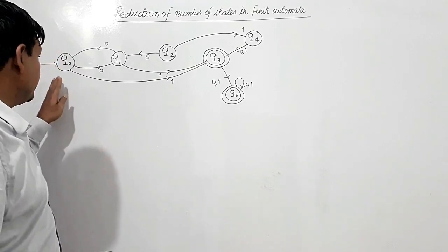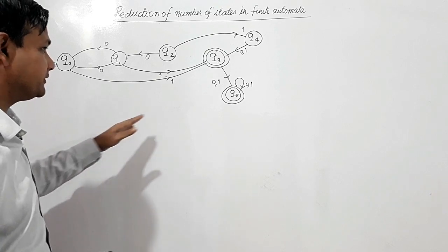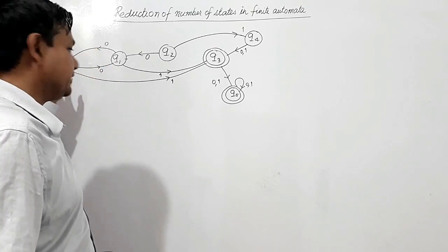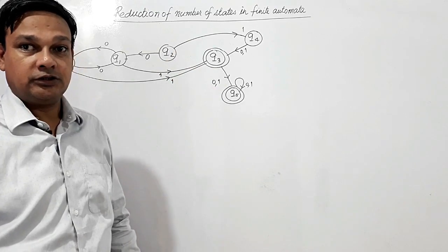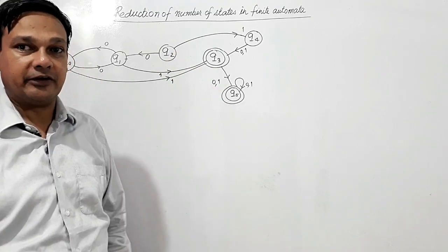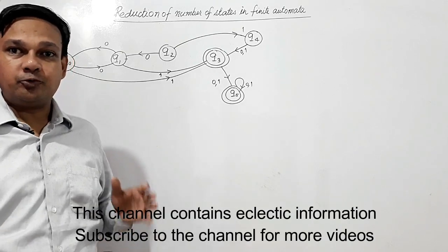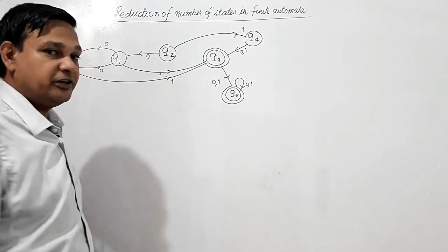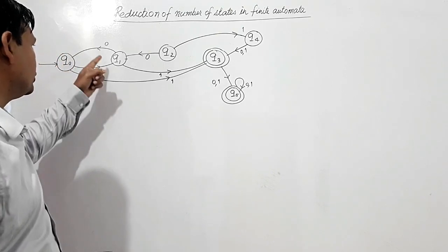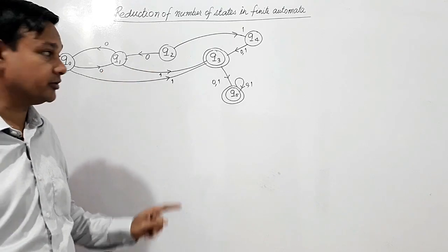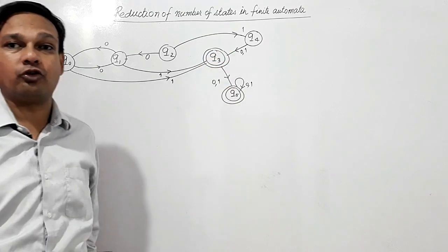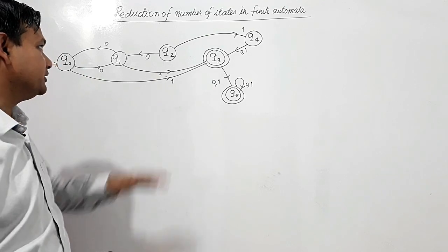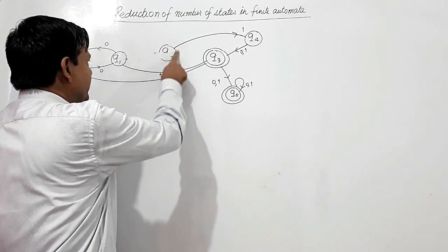We have a DFA in which the initial state is Q0, final states are Q3 and Q5, and non-final states other than the starting state are Q1, Q2, and Q4. To minimize this DFA, first we check whether there are states not reachable from the initial state. We can see Q0 reaches Q1, but Q2 is not reachable, and therefore Q4 is also not reachable. So we eliminate states Q2 and Q4.